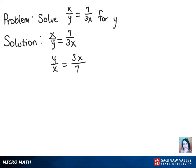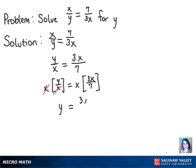So now we want to get y alone. We can multiply each side of the equation by x. In doing so, we then get y equals 3x squared over 7, and we can also write that as y equals 3 sevenths x squared. And that's our solution.